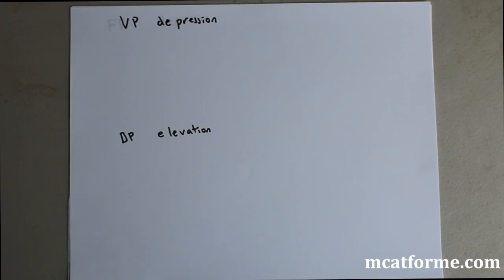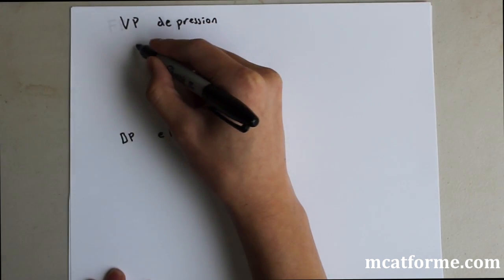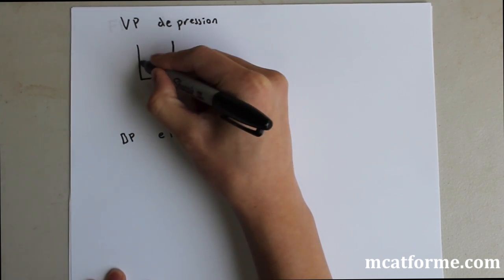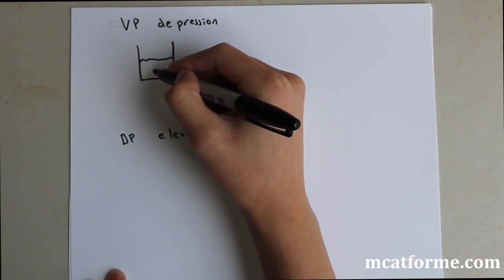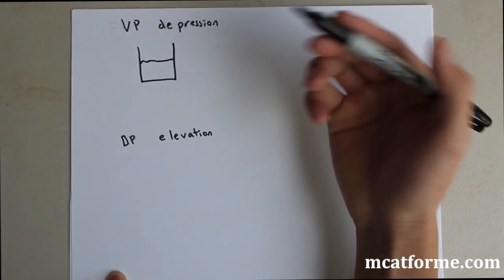The first thing we're going to talk about is vapor pressure depression. First off, let's define what vapor pressure is. Vapor pressure is the pressure that a gas exerts on a liquid. We know that a liquid, when it turns into gas, doesn't do it all at once.